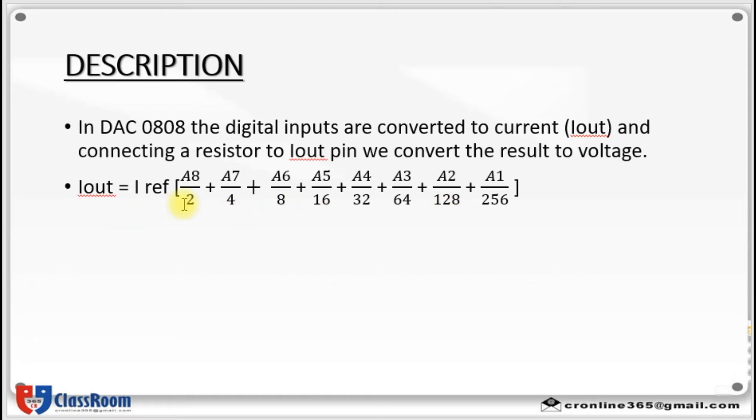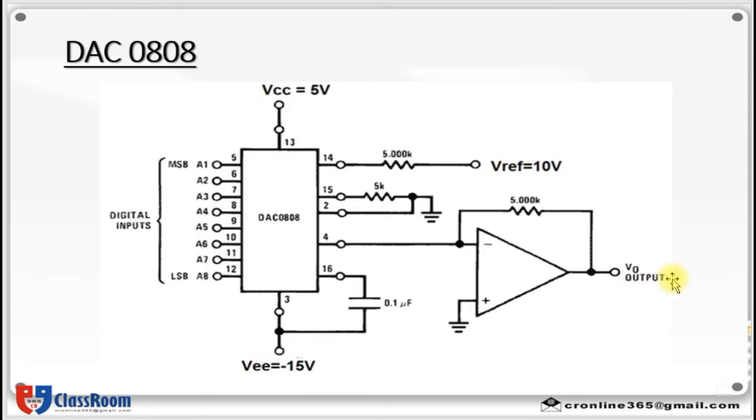Here you can see 2 raise to 1, 2 raise to 2, 2 raise to 3 and so on up to 2 raise to 8. So here we convert the result to voltage. Then VEE is set as minus 15 volt and which is connected by means of a 0.1 microfarad capacitor and positive supply is grounded here.